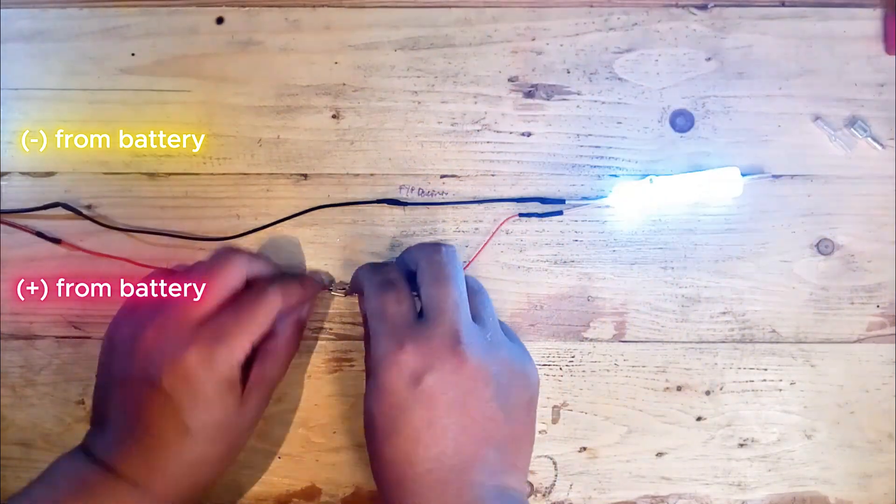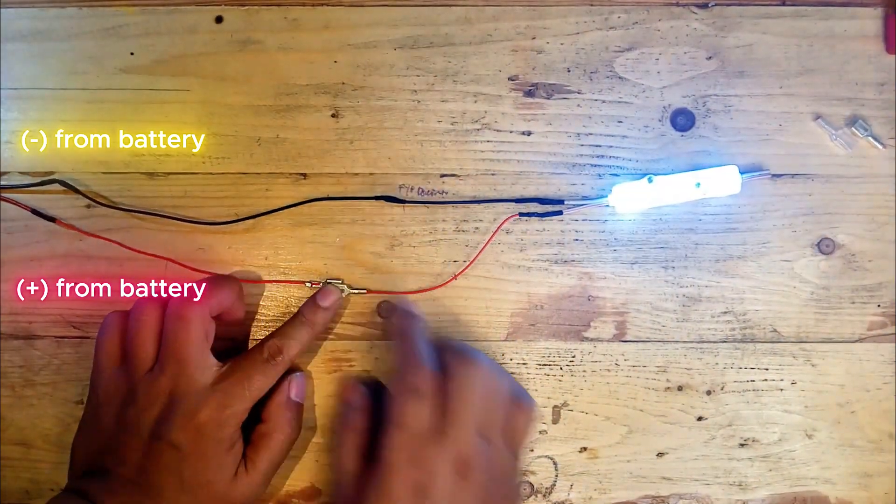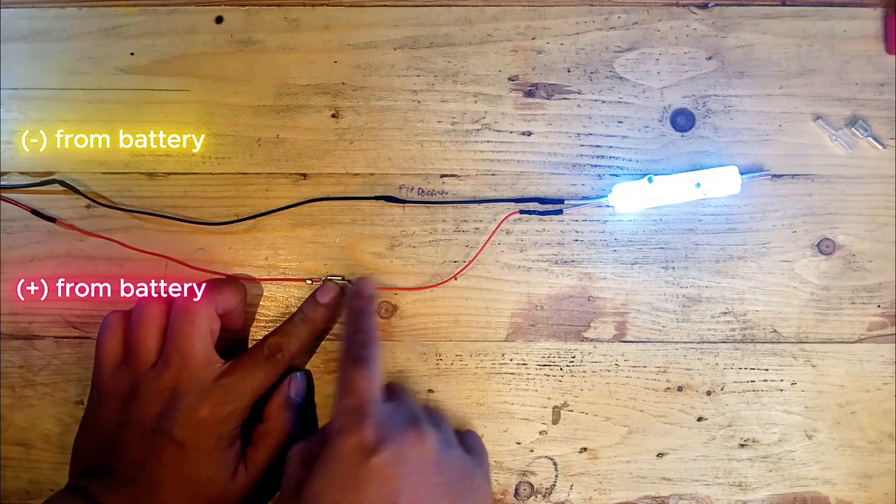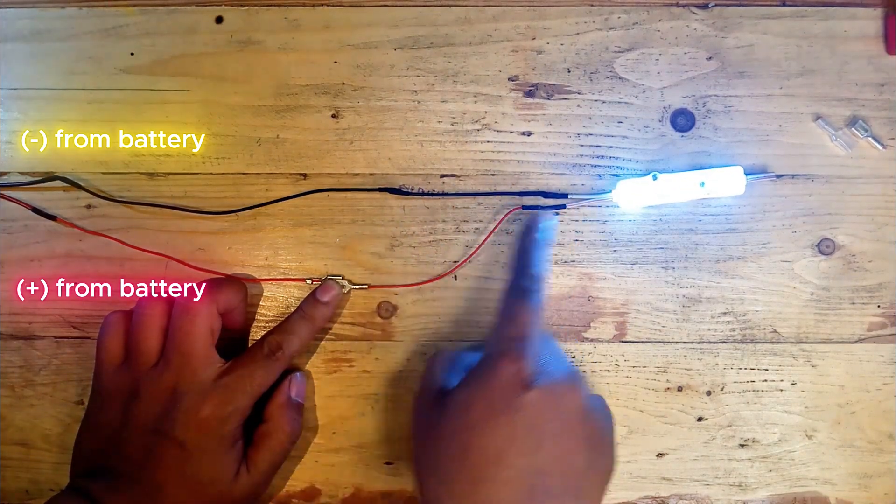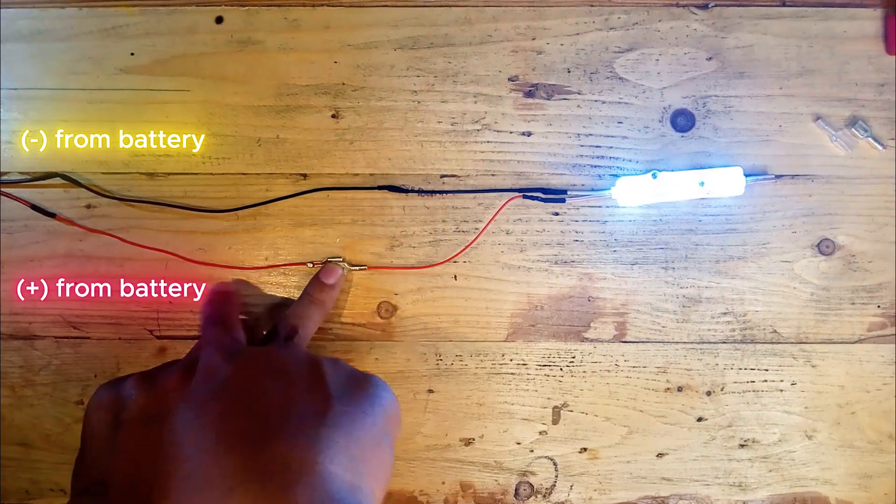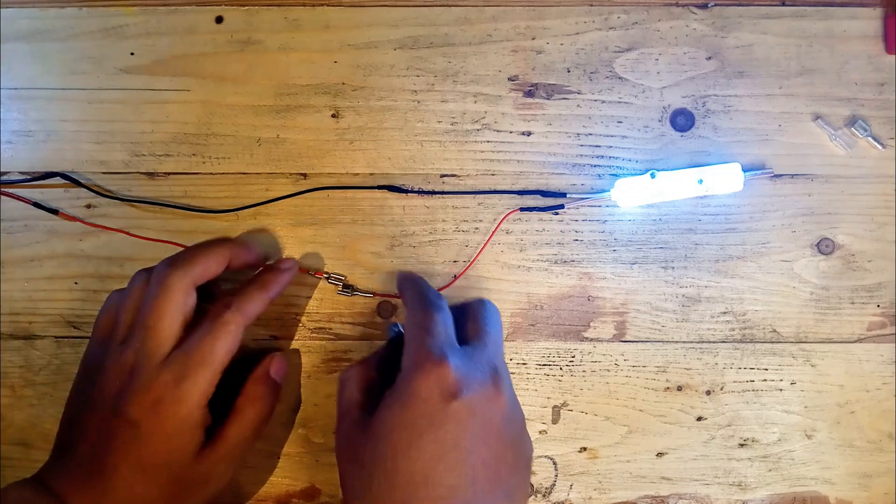The basic principle is simple. When the switch is closed the circuit is complete and the light turns on. When the switch is open the circuit is broken and the light turns off.